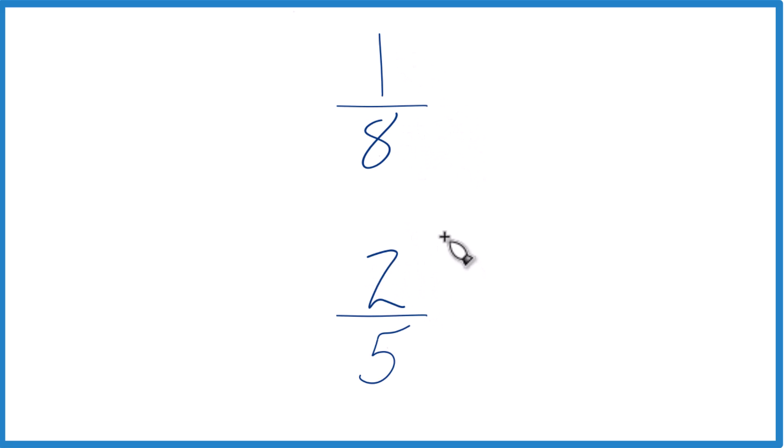The other way is to find a common factor, something that both 8 and 5 go into. We're looking for a common denominator, because then we could just compare the numerators and we'd be done.